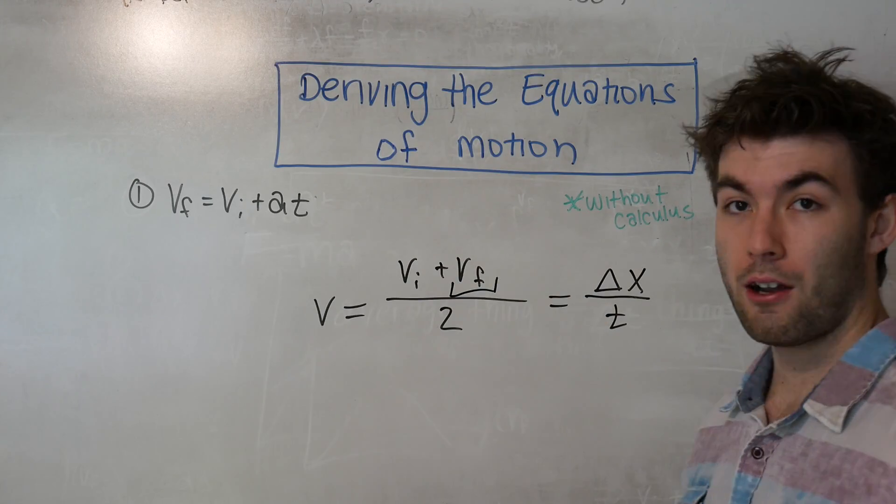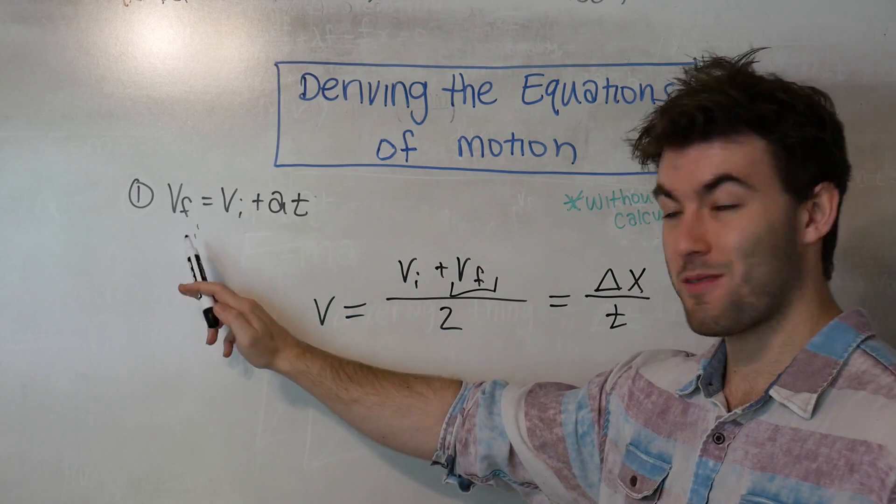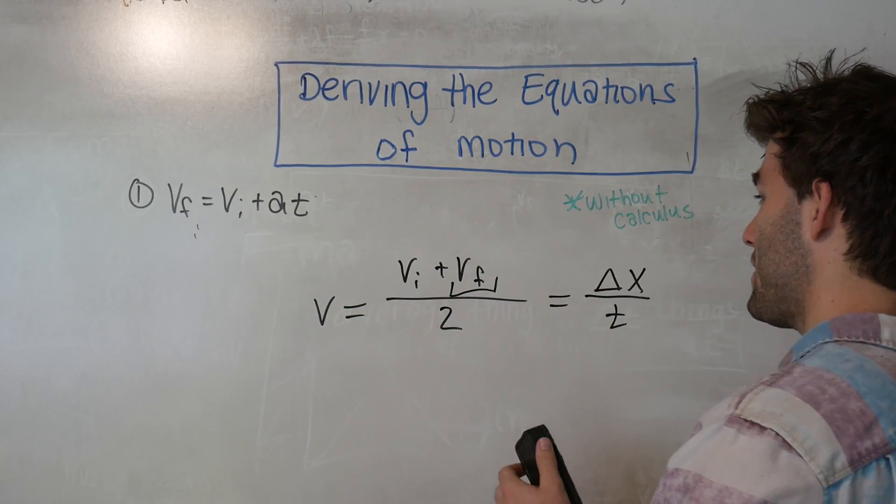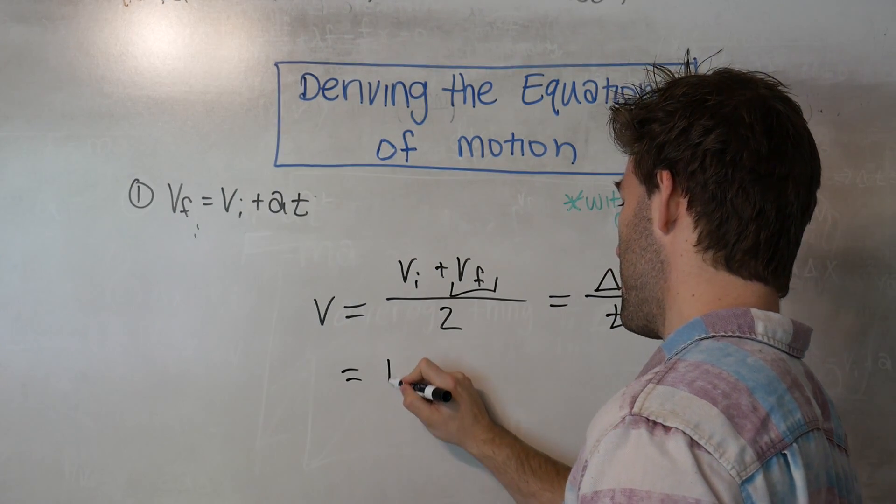So one more thing that we need to do before we can get to the second equation of motion is redefine our VF. Right here we defined in our first equation of motion that VF is VI plus AT. So we are going to substitute that into this equation.